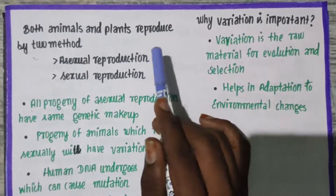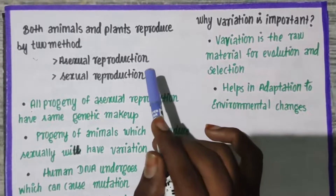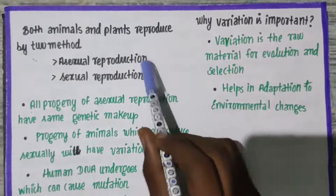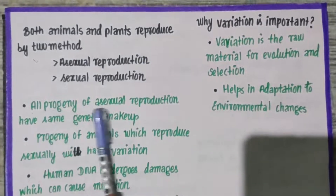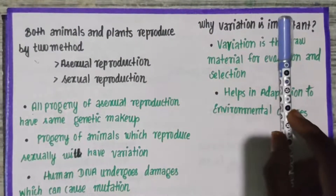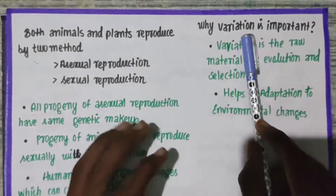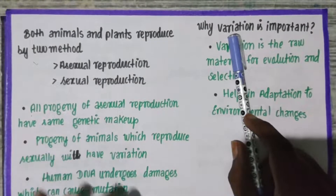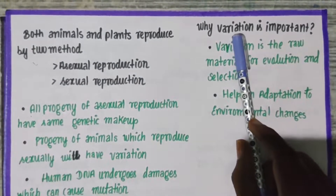Asexual reproduction involves one parent. In sexual reproduction, there is the involvement of two parents and fusion of gametes also takes place. All progeny of asexual reproduction have the same genetic makeup. Progeny is the new offspring — the new baby is a form of progeny.